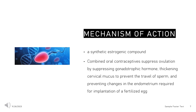Mechanism of Action: Ethanolestradiol is a synthetic estrogenic compound. Use of estrogens have a number of effects on the body, including reduced bone density. Combined oral contraceptives suppress ovulation by suppressing gonadotrophic hormone, thickening cervical mucus to prevent the travel of sperm, and preventing changes in the endometrium required for implantation of a fertilized egg. Ethanolestradiol decreases luteinizing hormone, decreasing vascularity in the endometrium, and also increases sex hormone binding globulin.